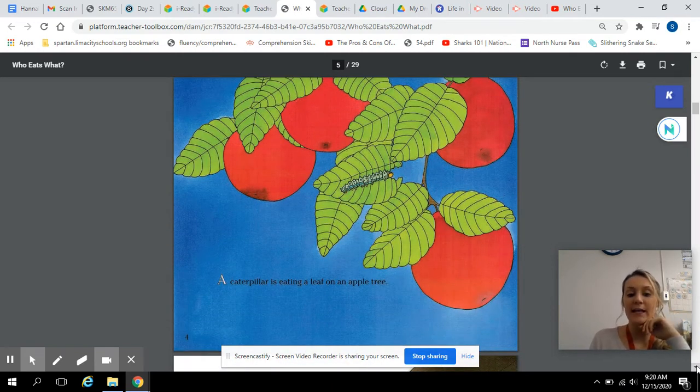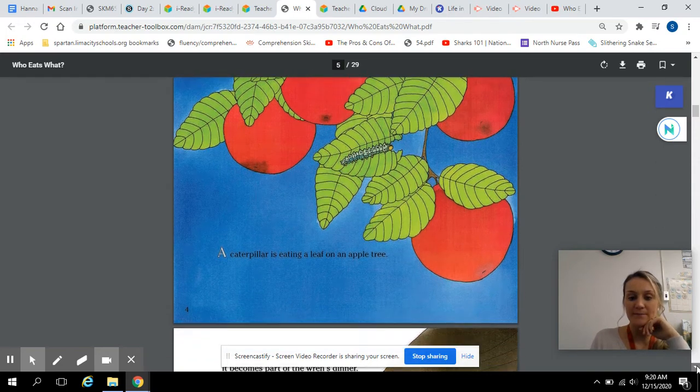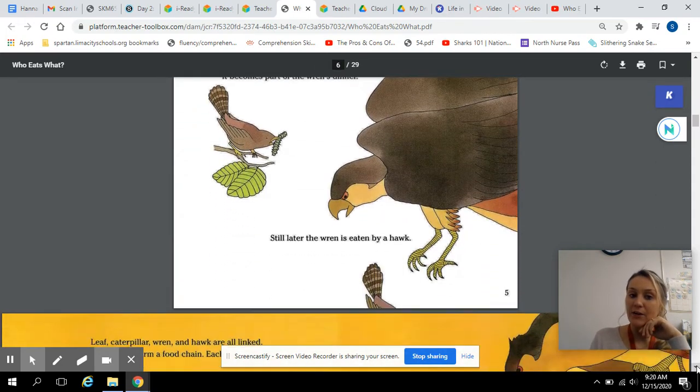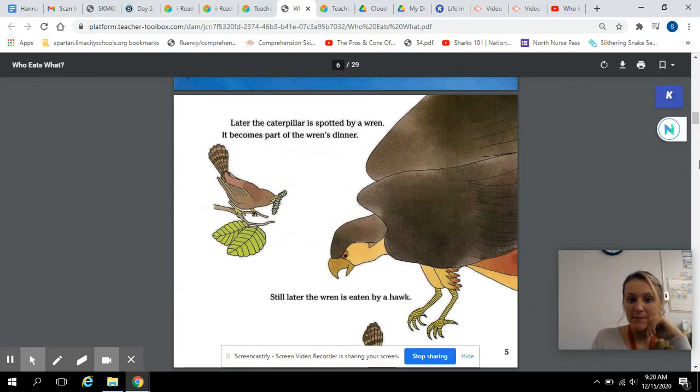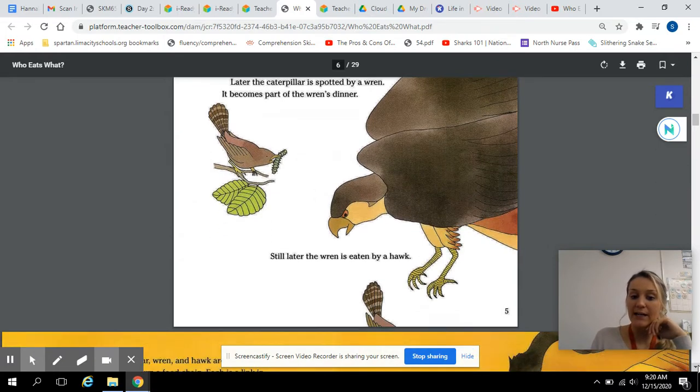A caterpillar is eating a leaf on an apple tree. Later, the caterpillar is spotted by a wren. It becomes part of the wren's dinner. Still, later the wren is eaten by a hawk.